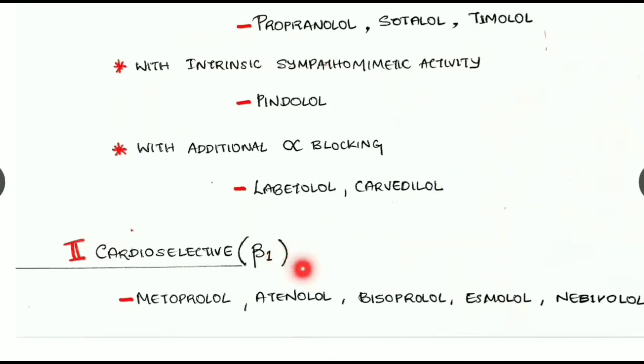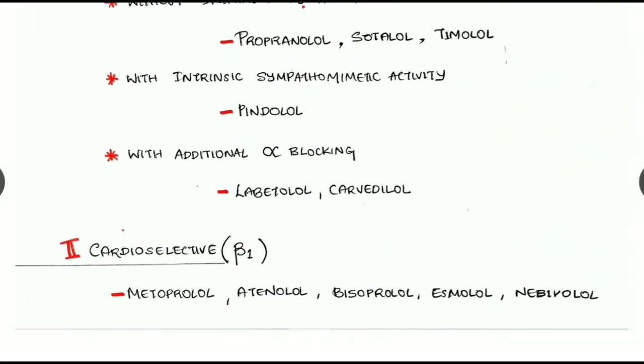The second group is cardioselective drugs, acting only at beta-1 receptors. Examples are metoprolol, atenolol, bisoprolol, esmolol, and nebivolol.